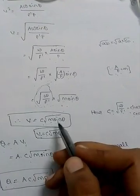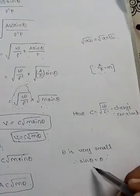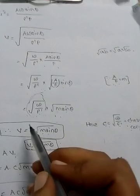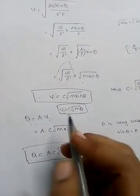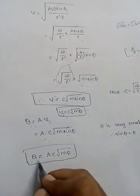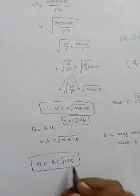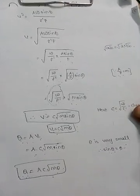We substitute v equals C·√(m·sinθ), where C is Chezy's constant. Since theta is very small, sinθ approximates to θ. So v equals C·√(m·θ). The discharge formula is Q equals A times velocity, giving Q equals A·C·√(m·θ). This is the discharge formula using Chezy's constant. If you have any doubts, do comment in the comment section. Thanks for watching, please subscribe.